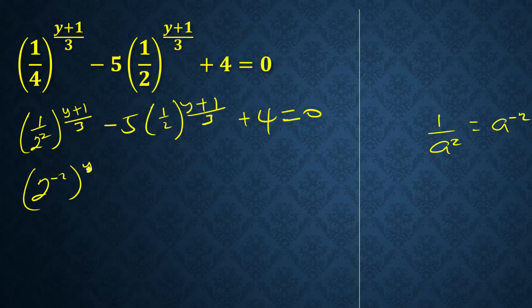Let me also change this to 2 to the power minus 1 times (y+1)/3 plus 4 equals zero. Let's make some adjustments.